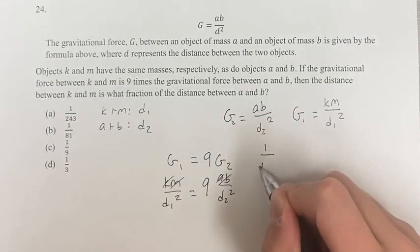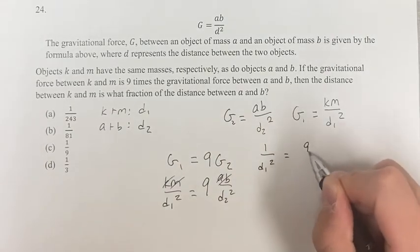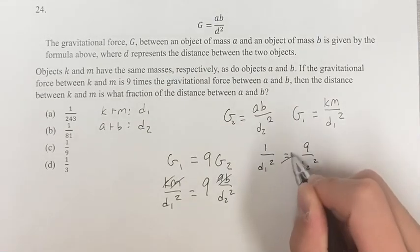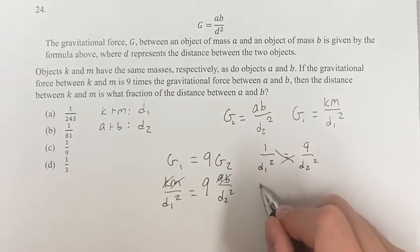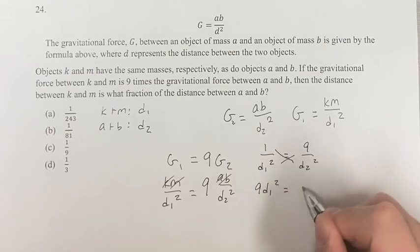We're left with one over D1 squared is equal to nine over D2 squared. Now we can cross multiply, and we get that nine D1 squared is equal to D2 squared.